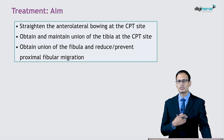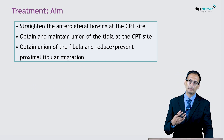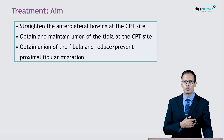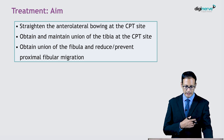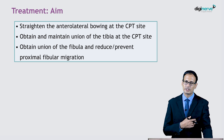Now coming to treatment of CPT. What are the aims of treatment in CPT? We have to straighten the anterolateral bowing of tibia, obtain and maintain the union of pseudoarthrosis in tibia, obtain the union of fibula, and prevent the proximal migration and associated ankle valgus issues.